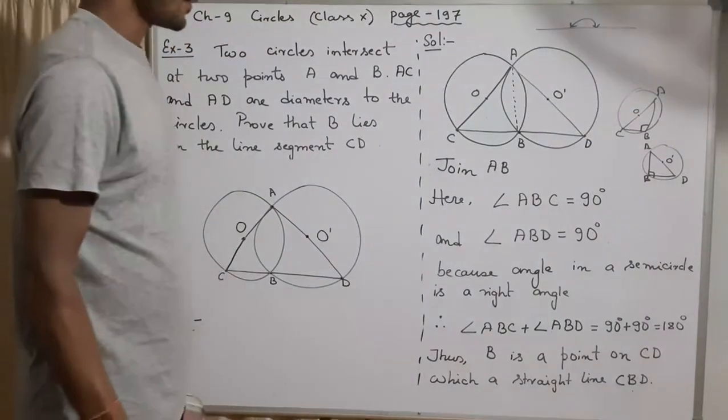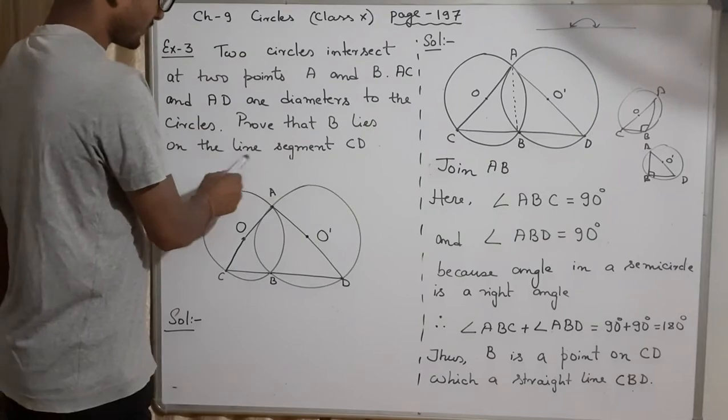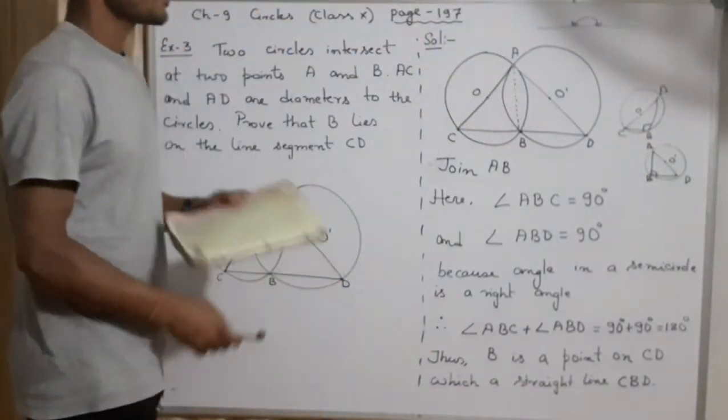Otherwise it would never be 180 degree, isn't it? 180 degree means what? If something is 180 that means what? It is a straight line. So here I got 180 degree, these two adding, this CBD is a straight line. That means it is a 180 degree. So it is a straight line. So this is how you prove that B lies on the line segment which is a straight line. Right, so thank you.